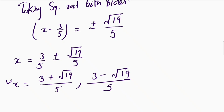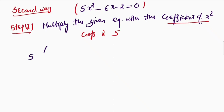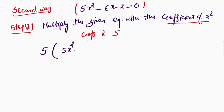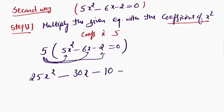Now let's discuss the second way. In this method the first step is to multiply the given equation with the coefficient of x square. Here the coefficient of x square is 5, so we will multiply the full quadratic equation with 5. This becomes 5 into (5x square minus 6x minus 2) equals 0. Multiplying: 25x square, minus 30x, minus 10, equals 0.